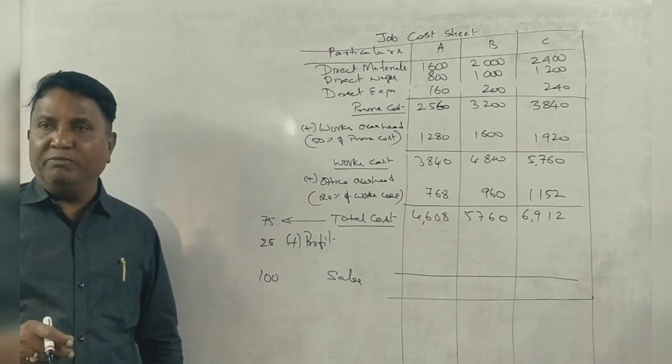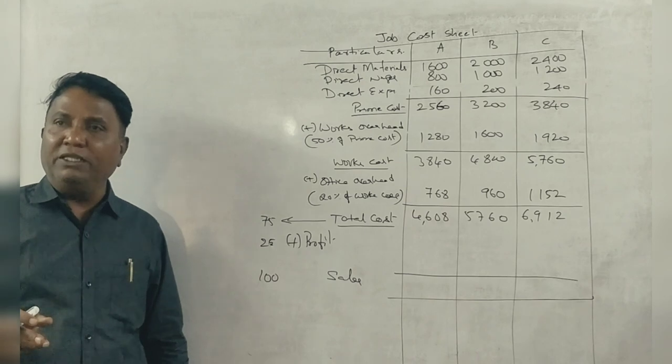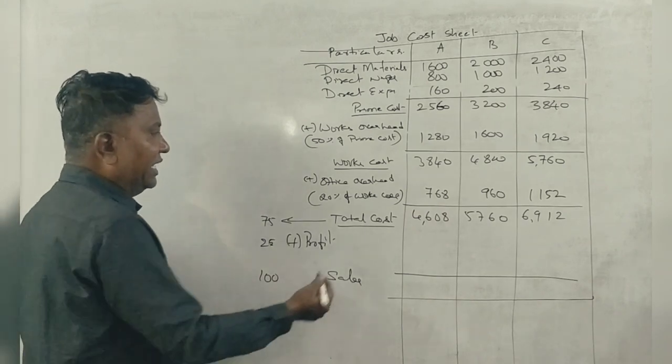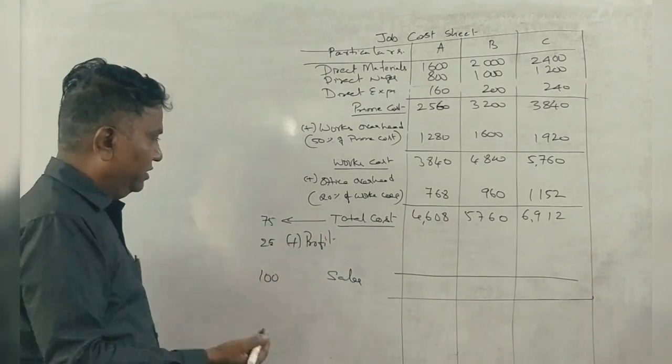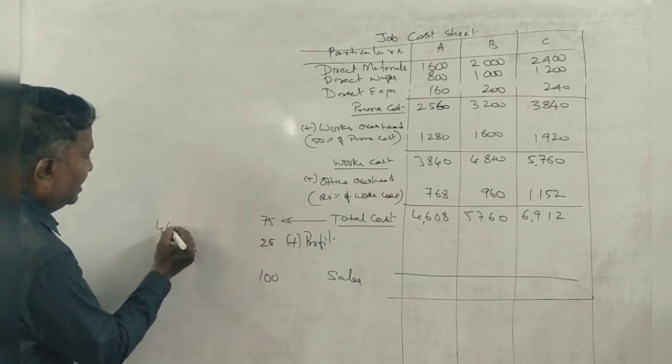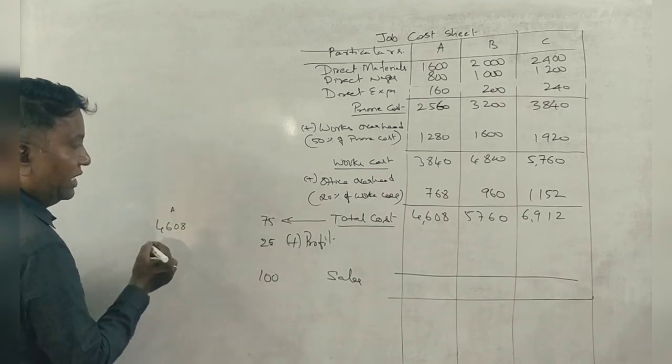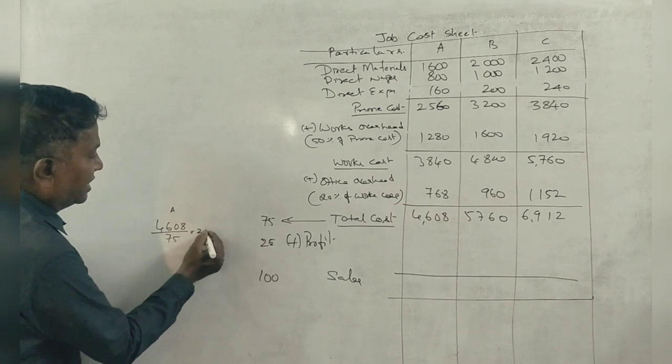25 rupees is profit. This cost is 75. If you have to calculate it, here's 4,608. This is 75%. For 100%, you calculate.